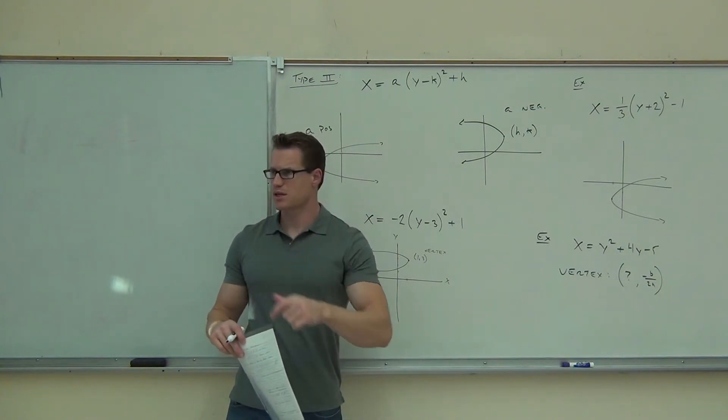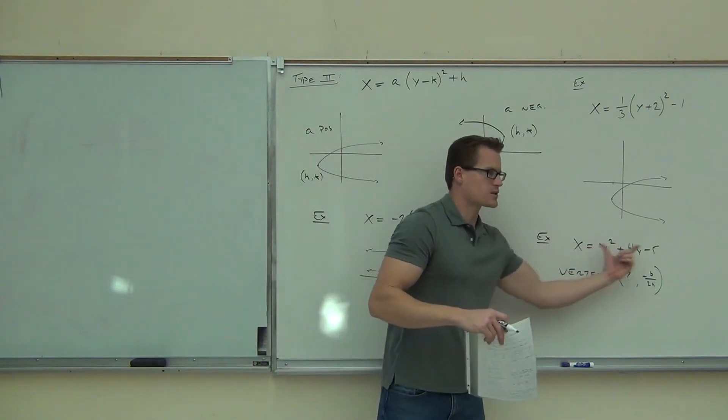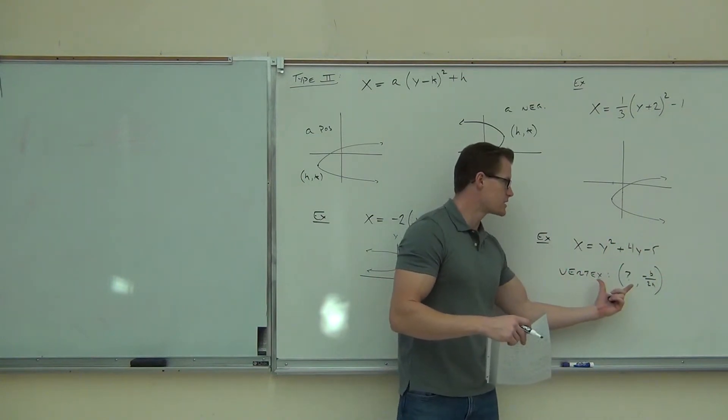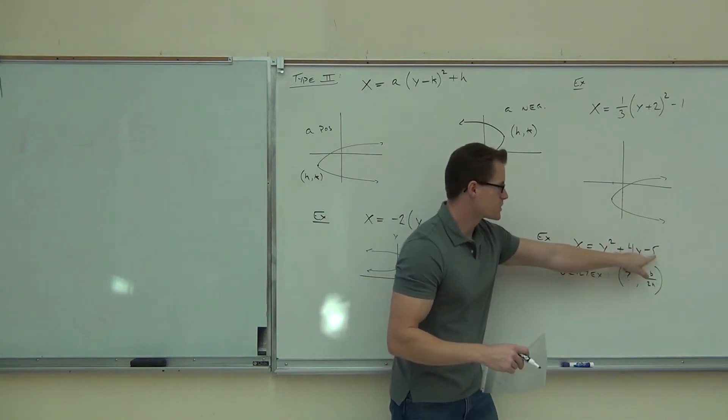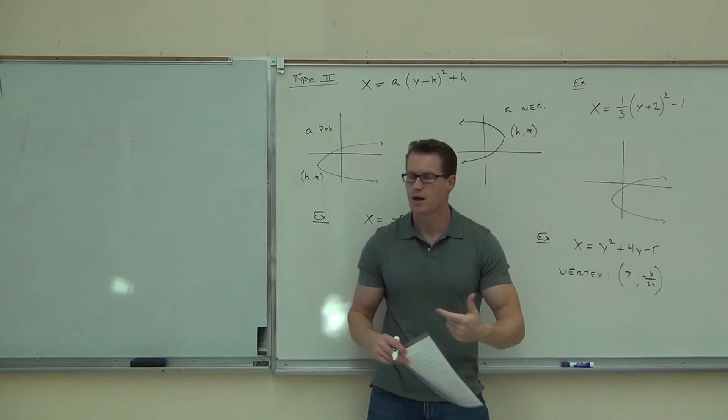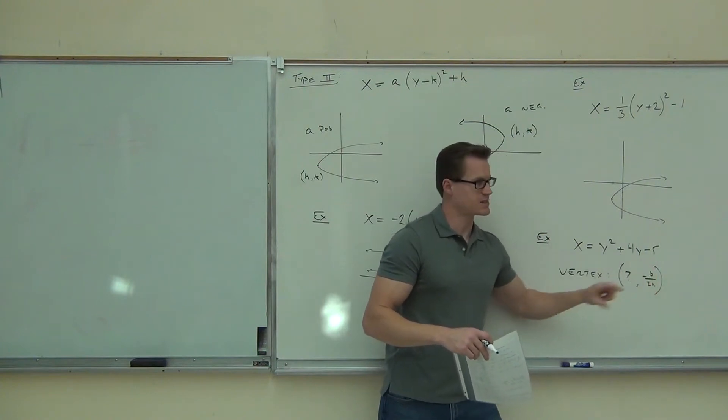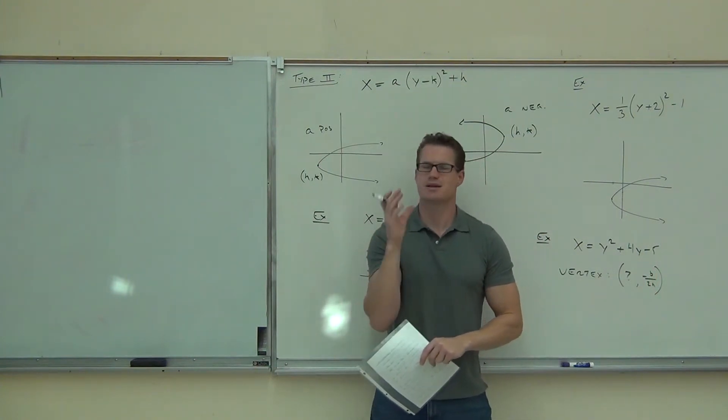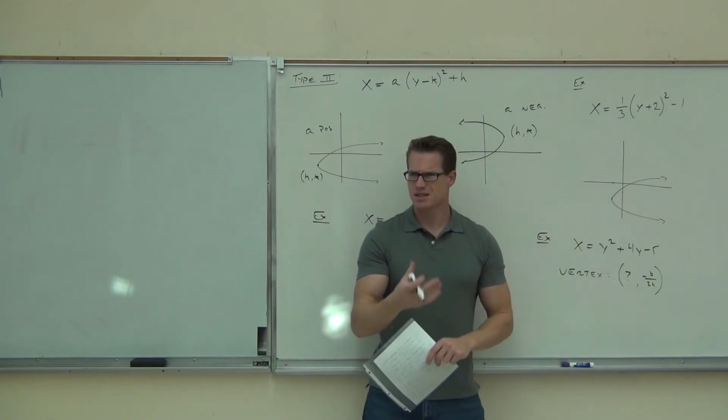Does that make sense why we switch those things? Because now you don't have any x coefficients to work with. You only have y coefficients. So that's the only one that's different. Your x-intercept would still be that number. Your y-intercept would be set that equal to 0 and factor and solve it. Your vertex is just reversed. Same exact idea. Try one of those out when you get home. Just think about it as if it's on its side.